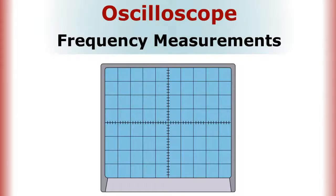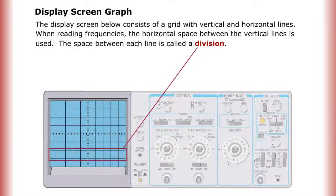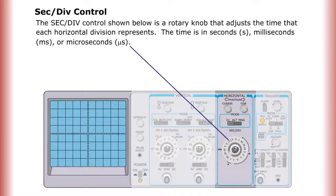Oscilloscope frequency measurements. The oscilloscope displays waveforms on a graph that shows the shape, voltage, and frequency of an electrical signal. When it displays a sine wave, the scope can measure its frequency using the graph on screen and the seconds per division control in the horizontal section. The display screen consists of a grid with vertical and horizontal lines. The space between each vertical line is called a division. The seconds per division control is a rotary knob that adjusts the time each horizontal division represents, in seconds, milliseconds, or microseconds.